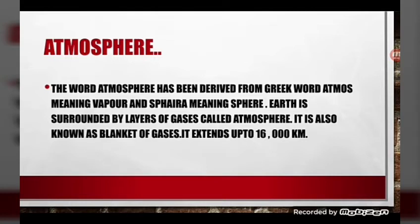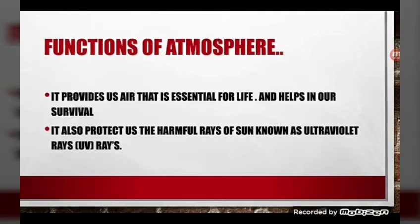First of all, we will talk about atmosphere. The word atmosphere has been derived from the Greek word 'atmos' meaning vapor, and 'spira' meaning sphere. Earth is surrounded by layers of gases called the atmosphere. It is also known as the blanket of gases, and it extends up to a height of 16,000 kilometers.